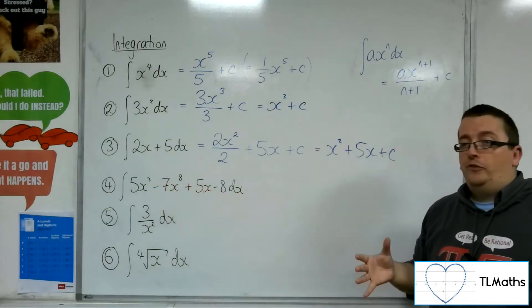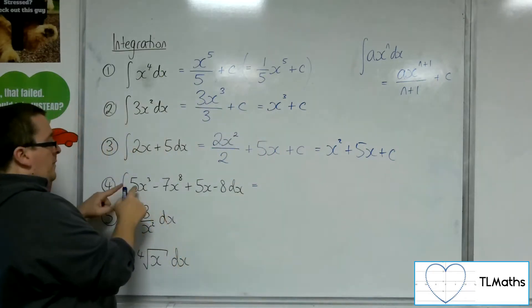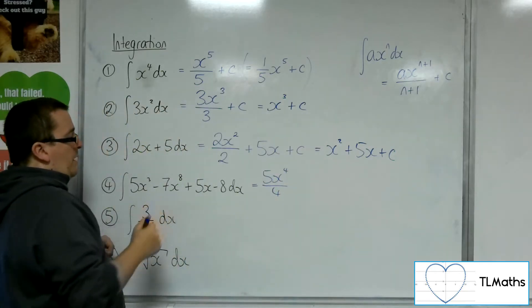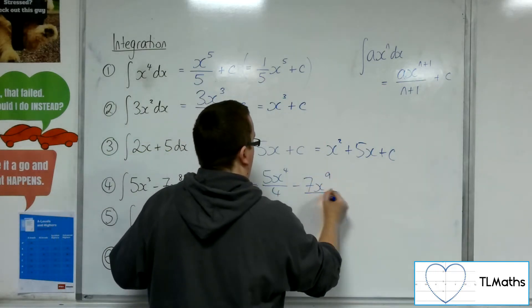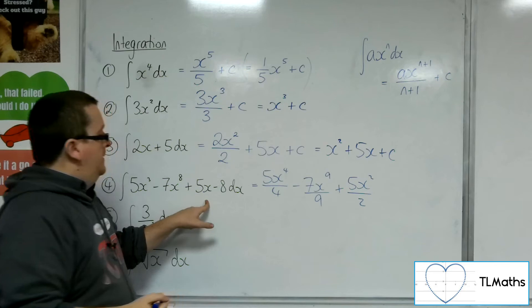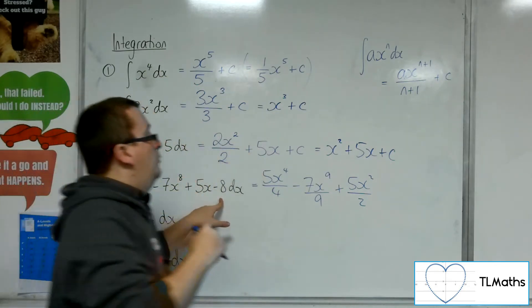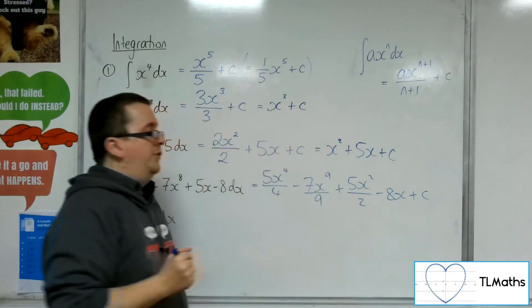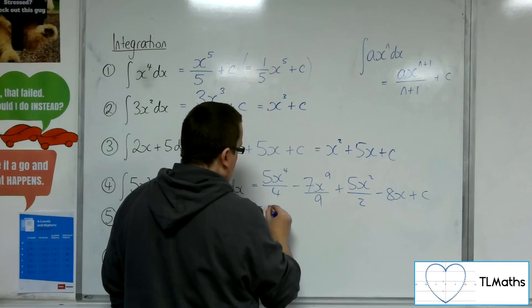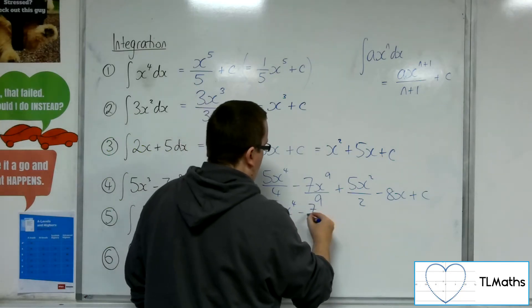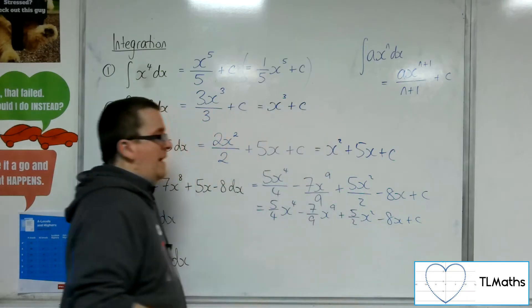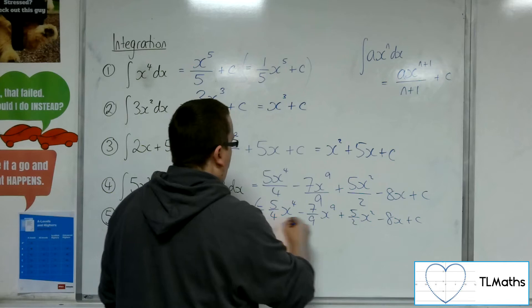Let's go into number 4. So, this time we've got 4 terms here. So we're going to have the 5x cubed integrating to 5x to the 4 over 4, and then integrating the minus 7x to the 8, so minus 7x to the 9 over 9. And then we've got the 5x, so plus 5x squared over 2. And then the minus 8. Much like the 5 up here became 5x, this would become minus 8x. And then you've got your plus c constant of integration. Now, that's perfectly good as a final answer, because none of those fractions can be simplified. You may want to rewrite it as 5 quarters x to the 4 minus 7 ninths x to the 9 plus 5 halves x squared minus 8x plus c. That is perfectly up to you. Either of these two forms is perfectly acceptable.